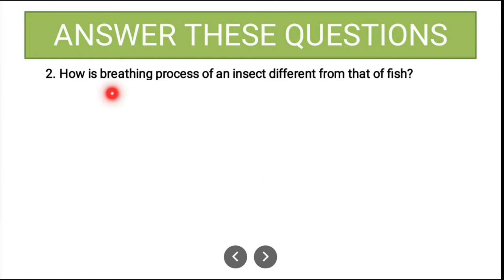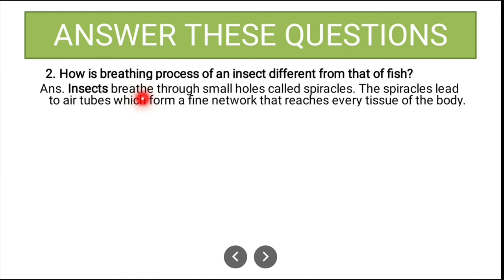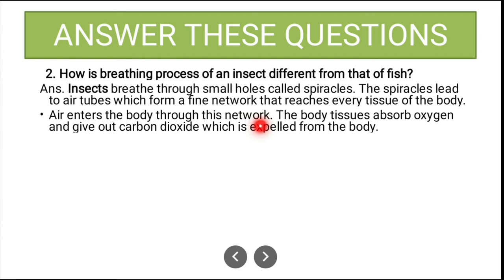Second long answer: How is the breathing process of an insect different from that of a fish? Insects breathe through small holes called spiracles. The spiracles lead to air tubes which form a fine network that reaches every tissue of the body. Air enters the body through this network; the body tissue absorbs oxygen and gives out carbon dioxide, which is expelled from the body.